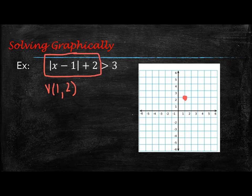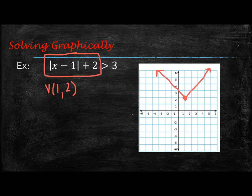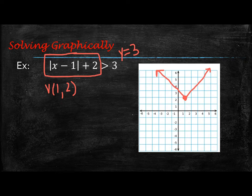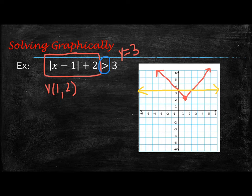So I'm going to graph that — the vertex is about right there — and it's going to open up with a slope of 1 on each side. Now I also want you to graph the right side: think of it as y equals 3. When I graph that line at y equals 3, it's going to be a horizontal line.